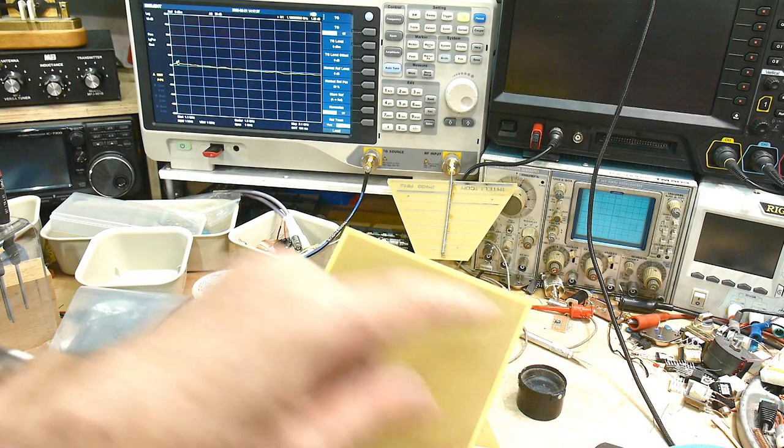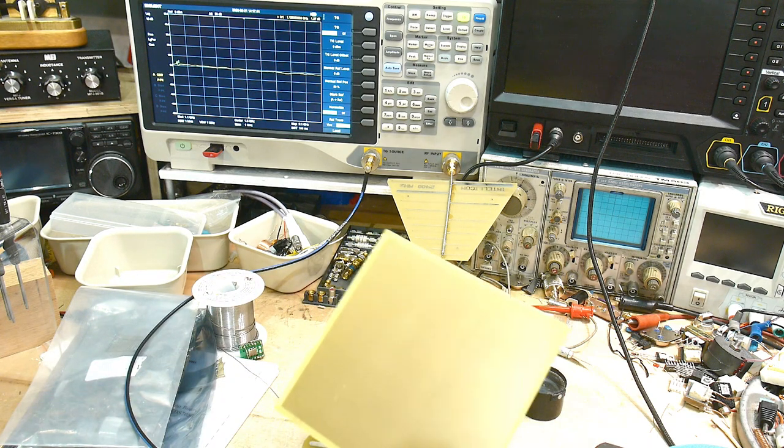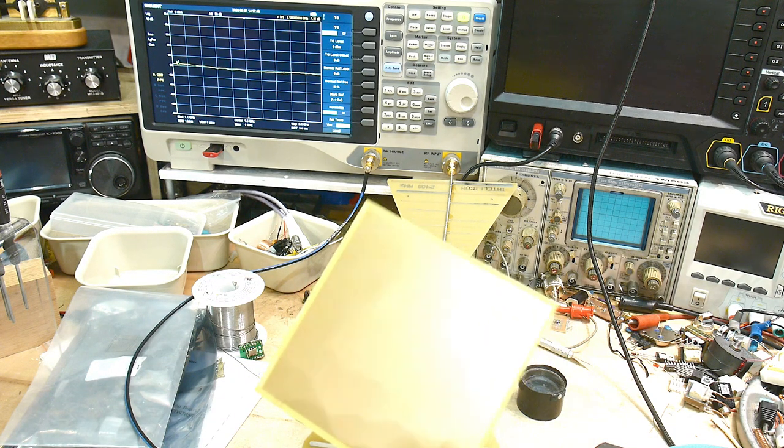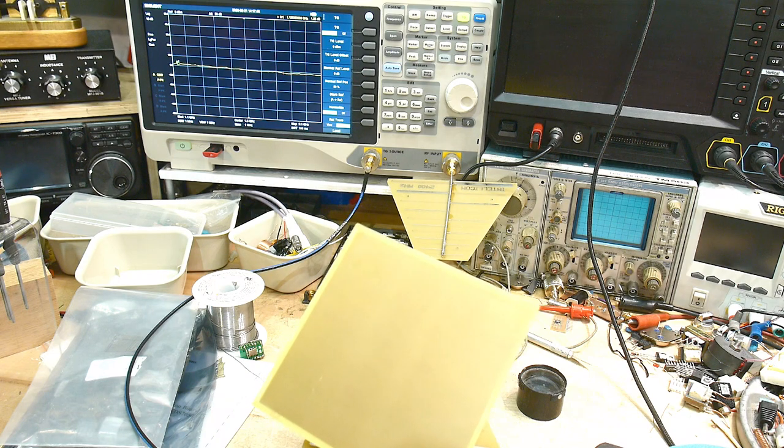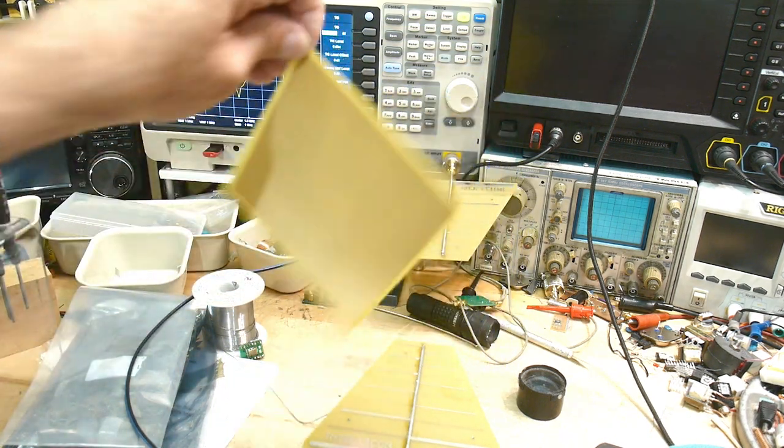In a different video, I showed polarizations of antennas and I used something called a wire grid polarizer. If you haven't seen that, I suggest you go watch that. It's a polarizer that is just a bunch of parallel wires.